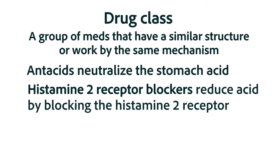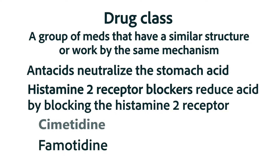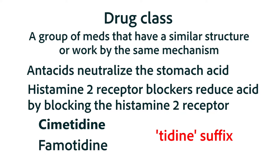The individual medications within the drug class of histamine 2 receptor blockers are known by their generic name. Histamine 2 receptor blockers include cimetidine and famotidine. Notice that both of those generic names end in the suffix '-tidine,' spelled T-I-D-I-N-E — not just D-I-N-E or I-N-E. That's important because other medications end in I-N-E and they're not histamine 2 receptor antagonists. So if you see a drug ending in T-I-D-I-N-E, you know it's a histamine 2 blocker.